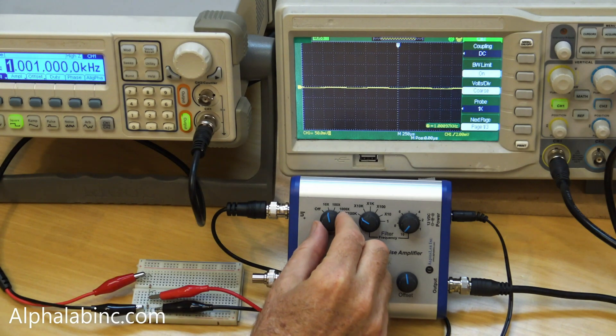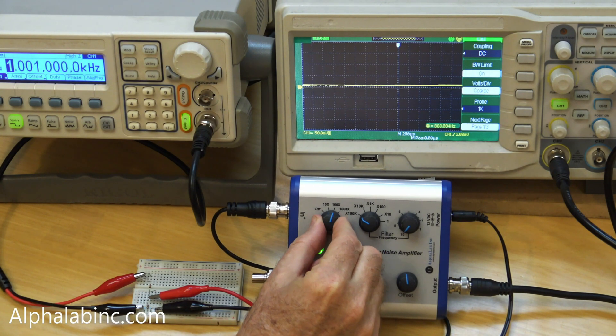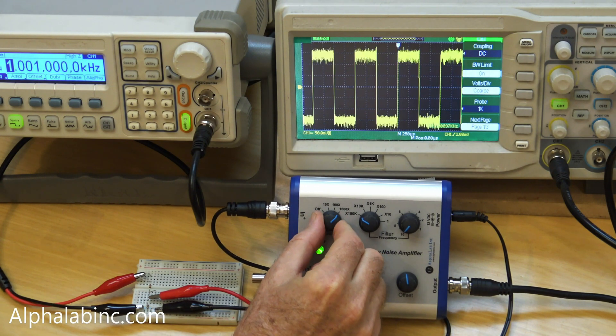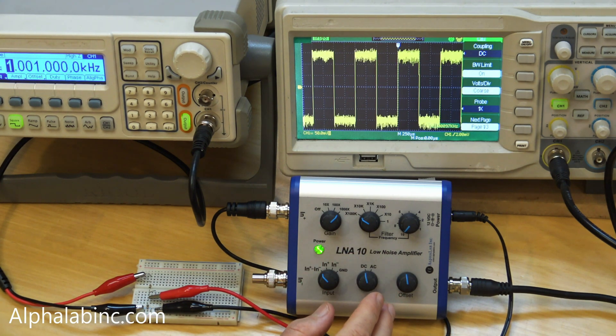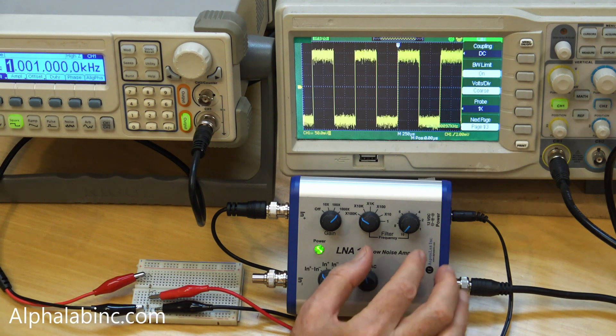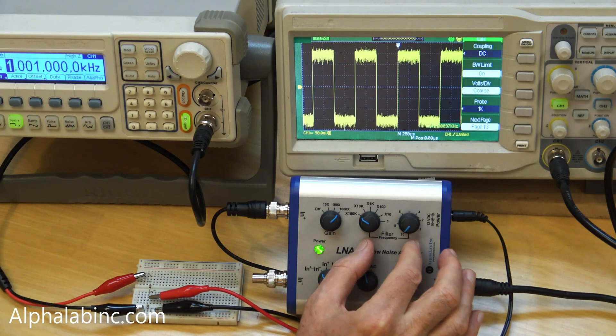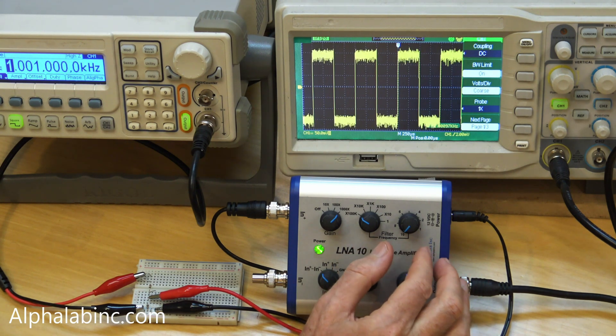The amplification levels are 10x, 100x, and 1000x. This amplifier does not do unity gain. There's a one-pole low-pass filter that's continuously adjustable from 1 megahertz down to 1 hertz.